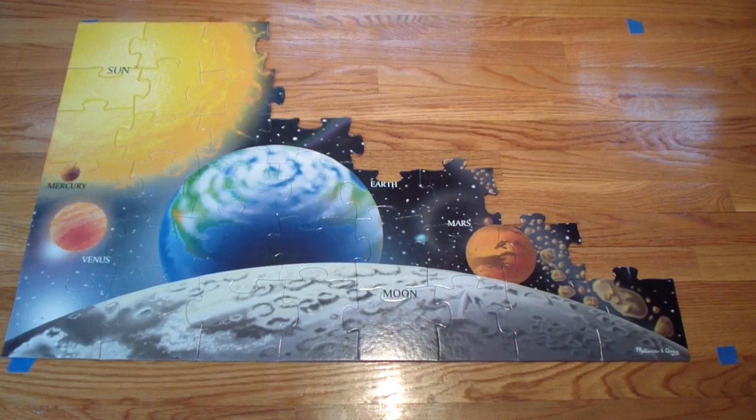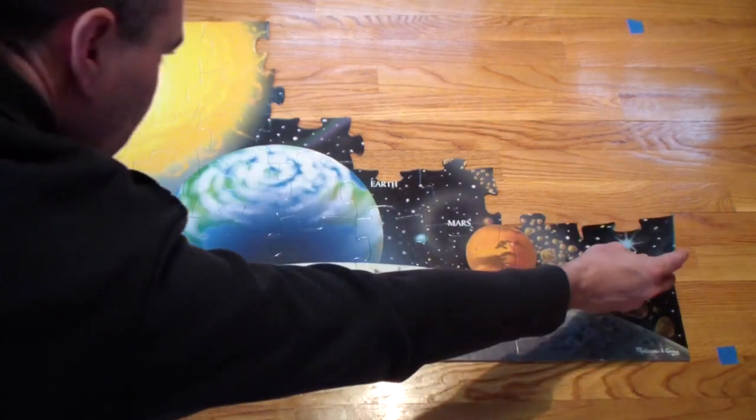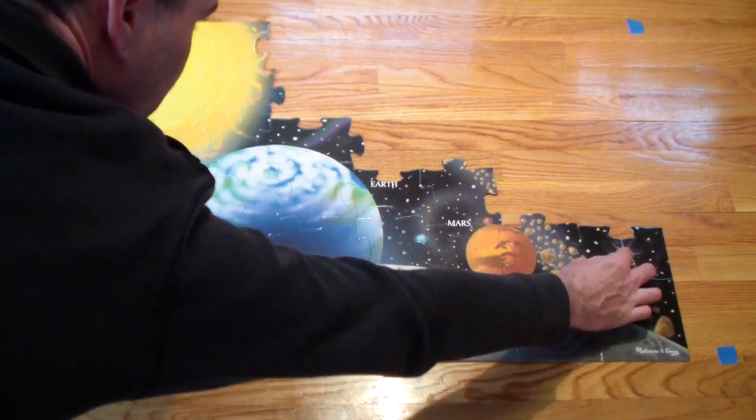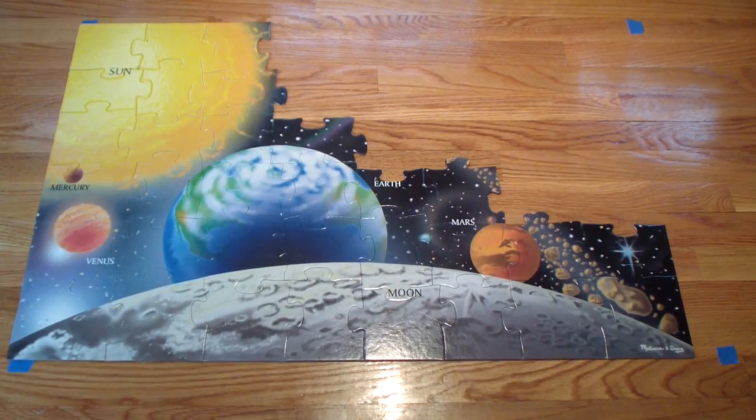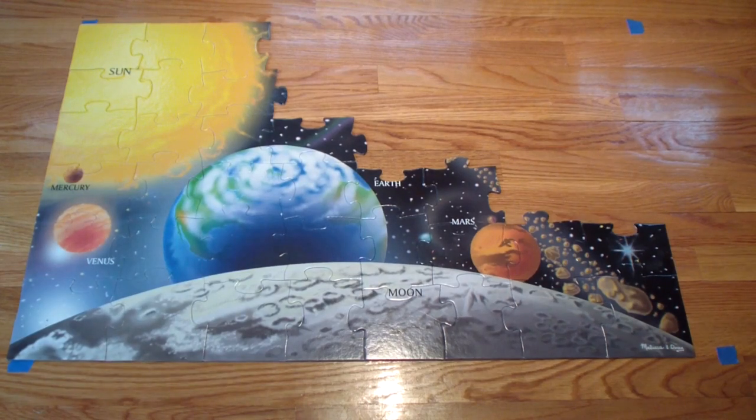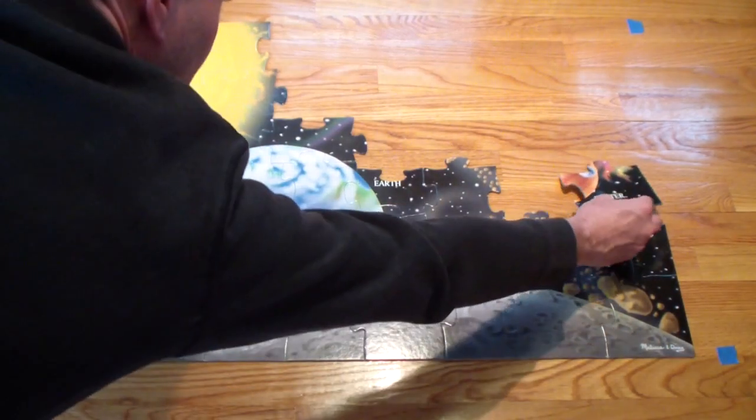Now there we have Mars. Mars is the fourth planet from the sun. One year is about 687 days. Its max temperature is about 95 degrees. It's also known as the red planet and it's the second smallest planet in our galaxy.